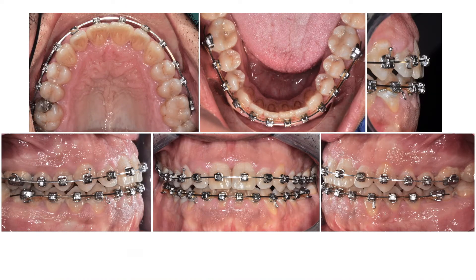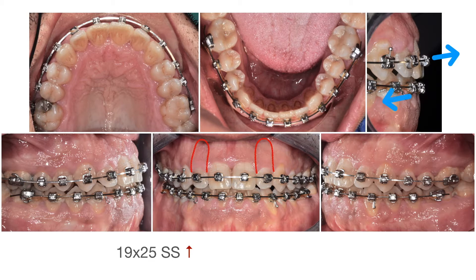Once the bite has settled, we put a 19x25 SS on the upper arch for 10 weeks, to finalize the uprighting of 12 and 22. In such situations, make sure to put a power chain to prevent undesirable space openings due to the torquing effect on the teeth. The overjet improvement leads to the solution of the upper laterals crossbite. We secure this result by applying class 3 early elastics, which have a positive torquing effect on the upper incisors and a negative torquing effect on the lower ones. The 018 stainless steel Australian wire in the lower arch has exactly this function — it lets the lower incisors lose torque while maintaining the alignment.